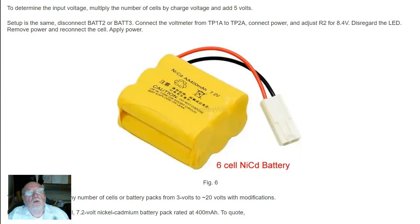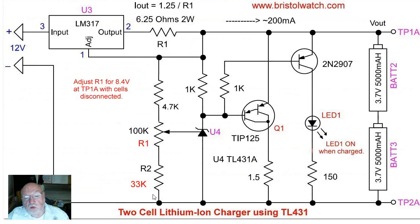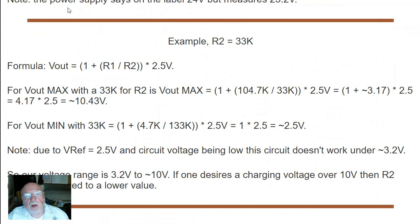So let's look at the formula on this. Most important is R2. R1 is composed really of the 4.7K and 100K pot. So let's do our calculation.